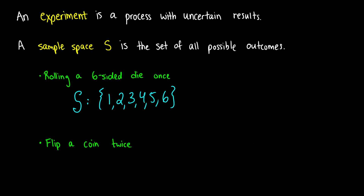Now an experiment where we flip a coin twice — it's either going to come up heads or tails, and we're doing this back to back. So our sample space is going to have more than two possible outcomes: heads then heads, heads then tails, tails then heads, or tails then tails. So there are four possible outcomes, and that's how we get our sample space.